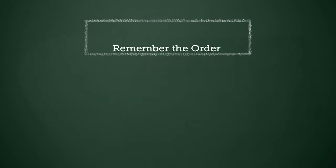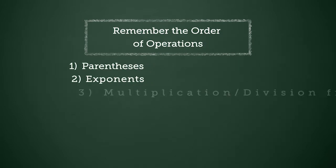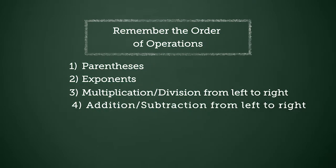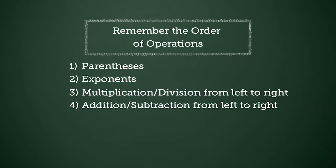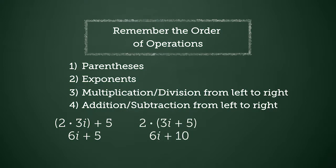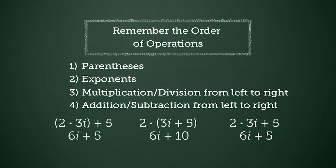It is very important that addends and factors are treated separately and that you keep the order of operations in mind. Employing the associative or commutative property can be done when all the terms are either addends or factors. These properties will result in wrong answers if a problem consists of both addends and factors. The best way to proceed in that case is to follow the order of operations.